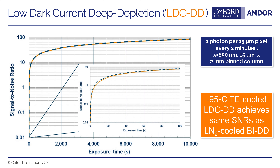Here we're plotting signal-to-noise ratios as a function of exposure time, comparing a low dark current deep-depleted sensor thermoelectrically cooled to minus 95°C versus a standard back-illuminated deep-depleted sensor cooled to liquid nitrogen temperature, under the same conditions. The signal-to-noise ratios between the two systems are the same — so the thermoelectrically cooled low dark current deep-depleted sensor achieves equivalent performance to a liquid nitrogen cooled standard back-illuminated deep-depleted sensor without the need for liquid nitrogen.